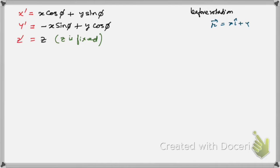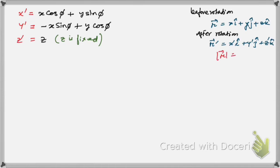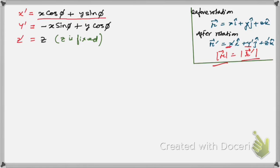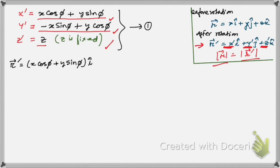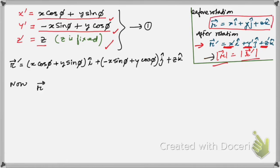Before rotation, position vector r = x i-cap + y j-cap + z k-cap. After rotation it becomes r-prime = x-prime i-cap + y-prime j-cap + z-prime k-cap. We have to show these two have equal magnitude. The magnitude of r vector is given by sqrt(x² + y² + z²). Now let's find the magnitude of r-prime vector. That's going to be sqrt(x'-² + y'-² + z'-²), where x-dash = x cos φ + y sin φ, and y-dash = -x sin φ + y cos φ, and z-dash = z.